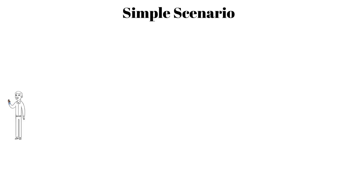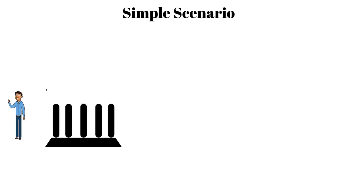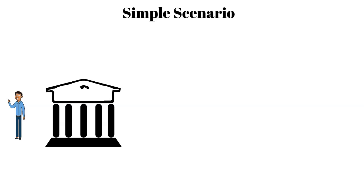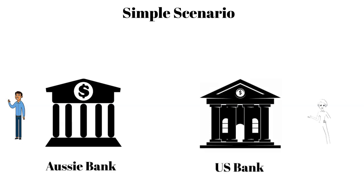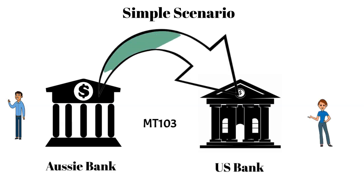In a simple scenario, a customer of an Australian bank wants to send US dollars to their friend who holds an account with a US bank that is a counterparty for the Aussie bank. The Aussie bank processes an Aussie-to-USFX transaction and sends an MT-103 to the US bank. That bank debits the Aussie bank's Nostro and credits the customer's account.